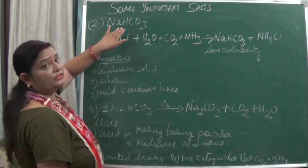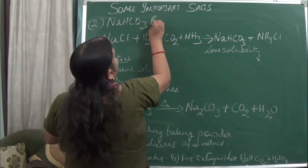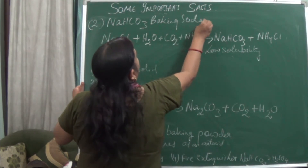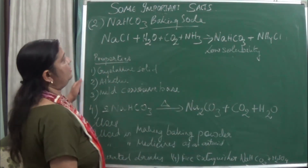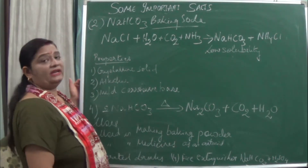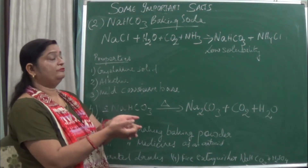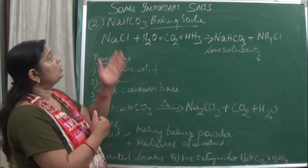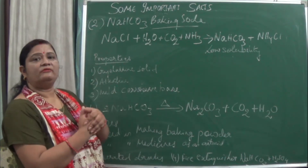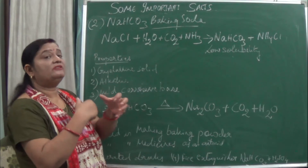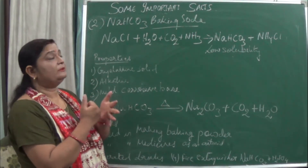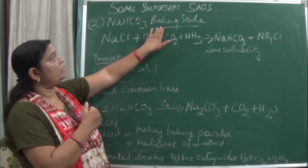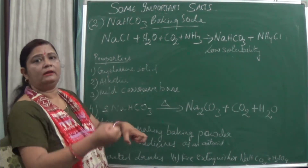The second salt to study is NaHCO3 — baking soda. It is commonly found in our homes because it is used to make things fluffy, like crispy pakoras. It is also used in many dishes to prepare them quickly, like chole.